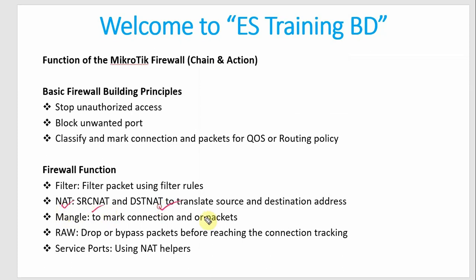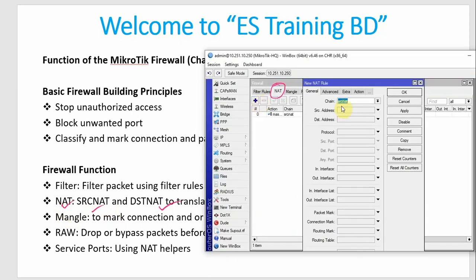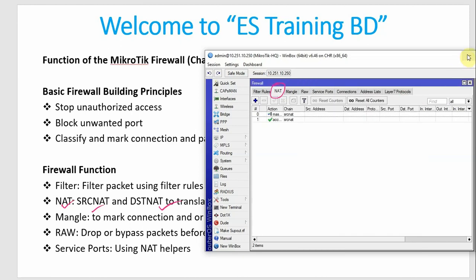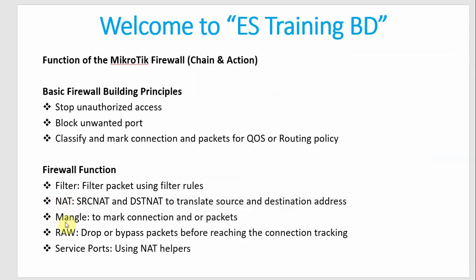Then, NAT — Source NAT and Destination NAT to translate source and destination addresses. We have to create rules and configure the source address and destination address. Then Mangle, to mark connections in order to classify packets — we can apply the Mangle rule.